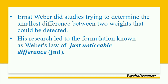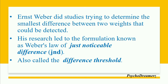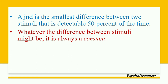Weber's Law of Just Noticeable Difference — we call it JND. The JND is the minimum difference which can be noticed, and it is also called the Difference Threshold. Threshold means the minimum point that is reached. The difference threshold is used to know the difference. A JND is the smallest difference between two stimuli that is detectable 50% of the time.